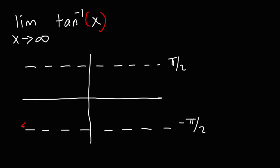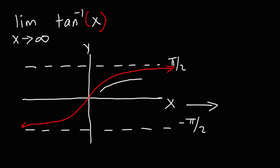The graph of arctangent of x stays in between these two asymptotes. As x approaches positive infinity, we follow the graph as it goes to the right, and the y value approaches pi over 2. So the limit as x approaches infinity of arctangent of x is equal to pi over 2.